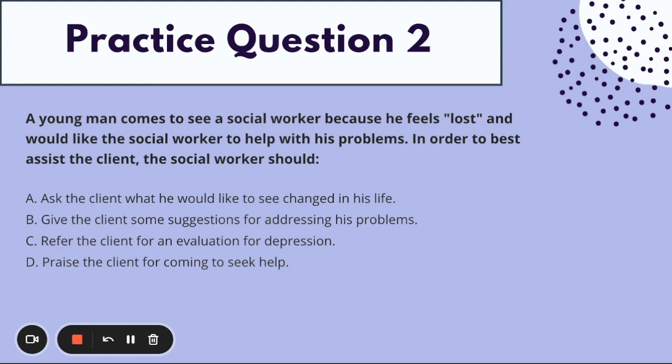The client comes to you feeling lost. How do we best assist the client? Using process of elimination: C — refer the client for an evaluation for depression — is too extreme. We have no knowledge yet that that's necessary, and feeling lost does not necessarily translate to depression. So C is out. D — praise the client for coming to seek help — is a great step and we do want to validate the client, but it's not going to assist them with feeling lost. C is out, D is out, and we're down to A and B.